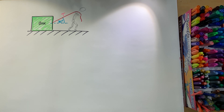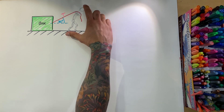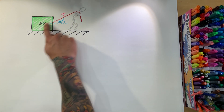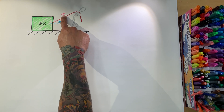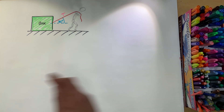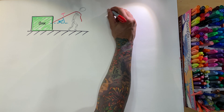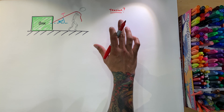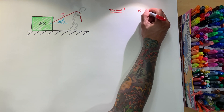Hey guys, welcome back to Genius Learning. I want to go over a physics one problem. You have the ground, this mannequin guy, and he's pulling a box with a rope at a 30-degree angle. There's tension in the rope, and we want to find what that tension is and what the normal force of the box is.